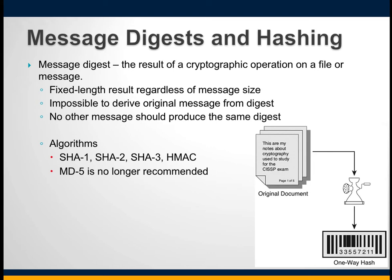Strong hashing algorithms are hard to break and will not produce the same hash value for two or more messages — each time they produce a new hash value. Hashing can be used to meet the goals of integrity and non-repudiation, meaning you cannot deny that you sent the data. Hashing algorithms are not intended to be reversed or reproduce the data; the purpose of the message digest is to verify the integrity of the message. In a well-designed message digest, even the slightest change in the input string causes the output hash value to change drastically — this is known as the avalanche effect.